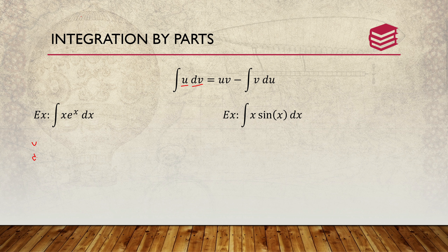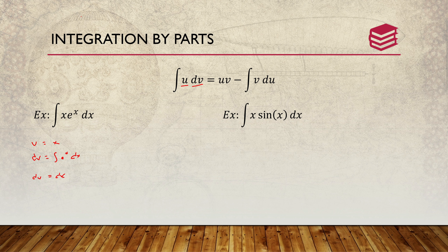You're going to have u and dv. Whenever you're choosing dv, look at e^x. So your dv will be the integral of e^x dx, and your u will simply be x. Then you take the derivative of both: your du will be dx, and your dv turns into v, which is just e^x, because the derivative and integral cancel out.